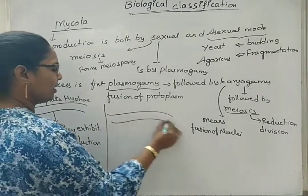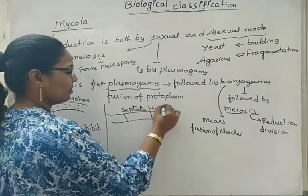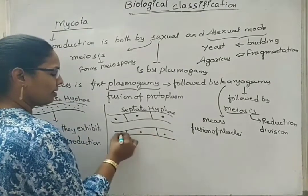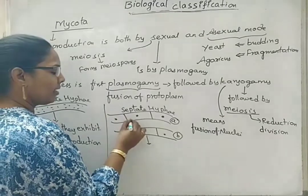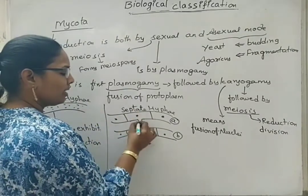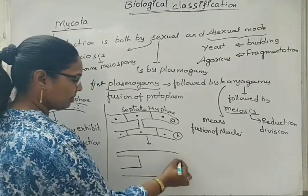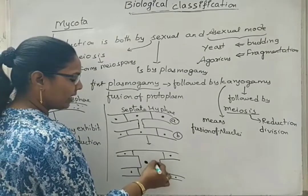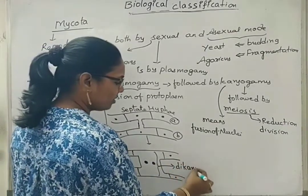If the hyphae is septate, here one nucleus, here one nucleus, here one nucleus. Another hyphae will try to fuse with this. We can say this is A hyphae and this is B hyphae. The chambers of each hyphae protrude towards each other and form a connection. This connection will be digested and in the next stage, a single chamber containing two nuclei is formed. This is termed as the dikaryotic stage.